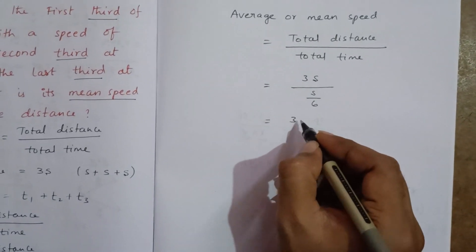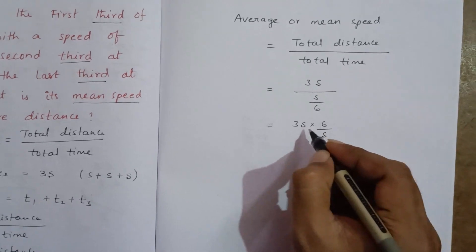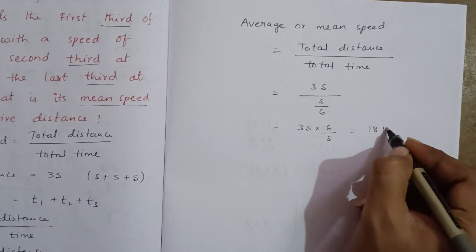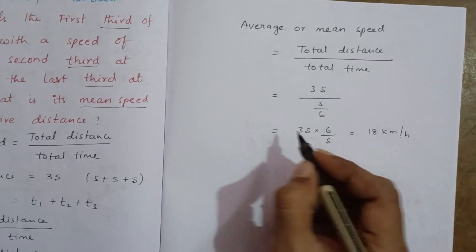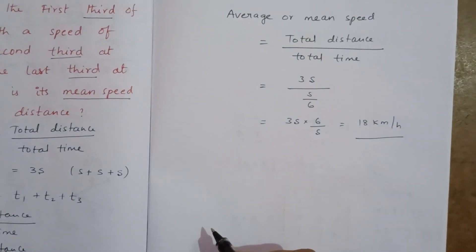We can write it as 3s into 6 by s. Since s gets cancelled, we get 18 km per hour. Average or mean speed is 18 km per hour.